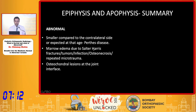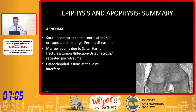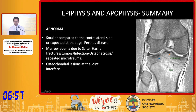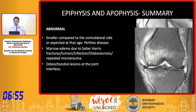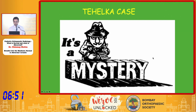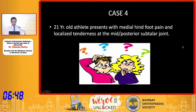Summarizing the epiphysis and apophysis: if it is smaller compared to the opposite side as we saw in Perthes, it is abnormal. If there is marrow edema due to Salter-Harris fractures, infection, or osteonecrosis, it is abnormal. If there are osteochondral lesions at the joint line, that is also an abnormal epiphysis.